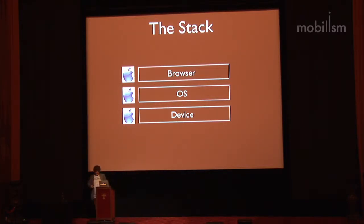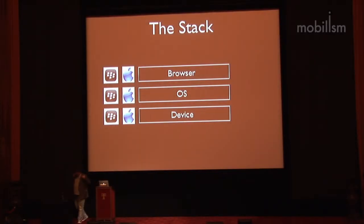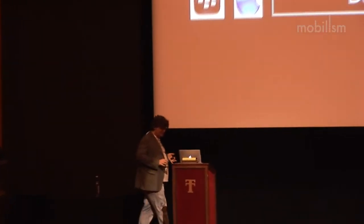What people generally don't realize is that apart from Apple, there's a second player that owns the entire stack - device, operating system and browser - and that's BlackBerry. BlackBerry also creates its own devices, its own operating system and its own browser. This is a business model of doing everything yourself. The big advantage is that you can tightly integrate the hardware and the software. That was especially Apple's big idea when they started on the iPhone - they wanted to make sure that integration was really, really tight. And that worked.